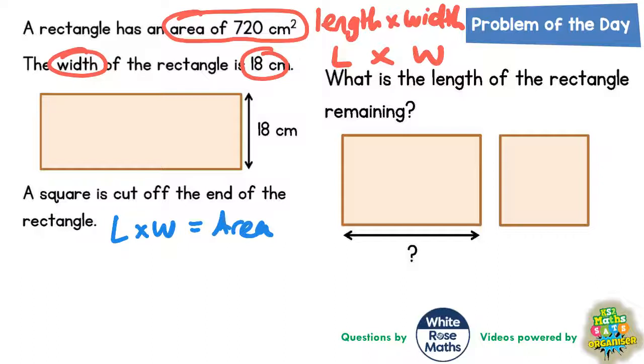Well the length we don't know so we'll still keep that as calling that letter L, but the width we do get told is 18. So L times 18 is going to equal the area which is 720. So a mystery number for the length multiplied by 18 is going to give us 720.